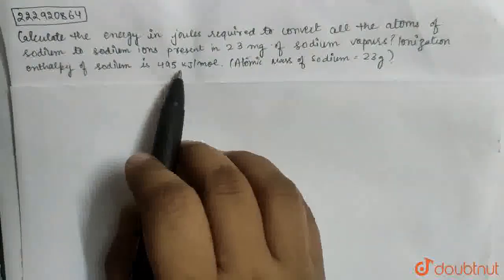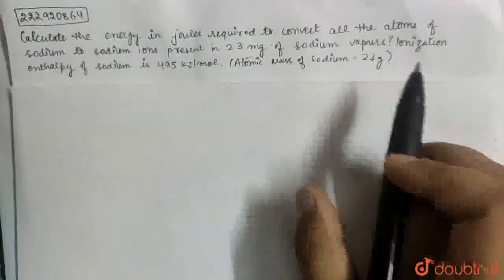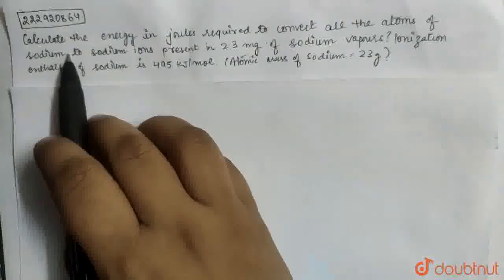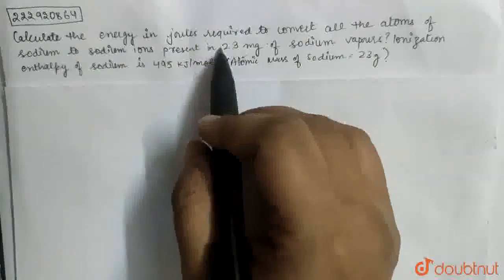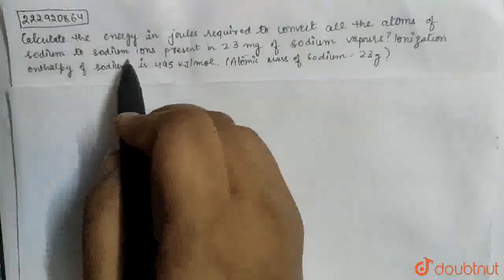This is 495 kJ per mole. Atomic mass of sodium is equal to 23. He has told us that we have to calculate energy. We have to calculate energy to convert all the atoms of sodium to sodium ions.